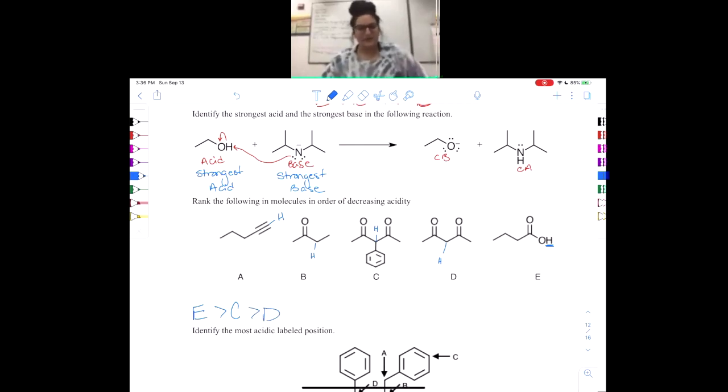And then between A and B, this is where it can be a little bit tricky. But if you think about it, on B, we're going to resonate again with this carbonyl versus A, we're going to resonate just with this triple bond. So it will be B and then A will be the least acidic.